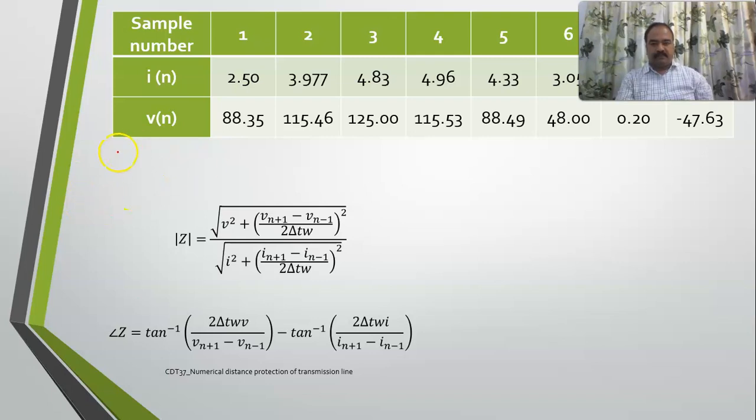They have already mentioned that it is 50 Hz, this is the signal frequency, and sampling frequency is 800 Hz. The signal frequency omega is equal to 2 pi f, equal to 2 pi into 50, equal to 314.